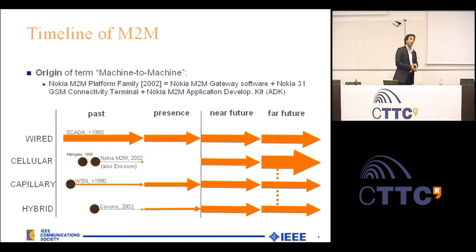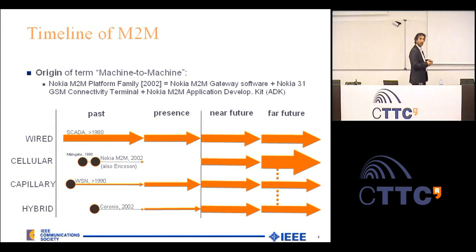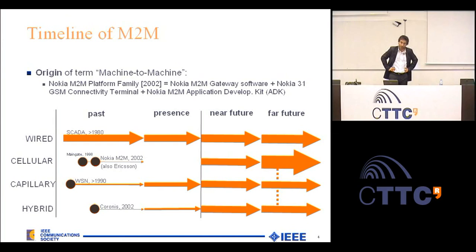Here I show you the timeline of machine to machine, where the term itself originated really within the Nokia family when they introduced the Nokia M2M gateway software and the connectivity terminal along with the development kit — that happened around 2002. Having said that, a lot of machine to machine systems have existed before that. We have a very healthy wired machine to machine community which should not be underestimated. Indeed, about 40% of all machine to machine systems today are wired and likely remain to be so. We also have the cellular systems, emergent capillary and hybrid systems.